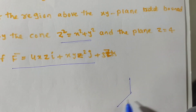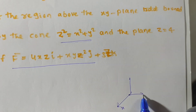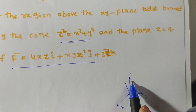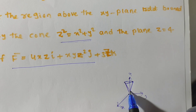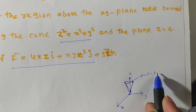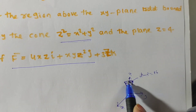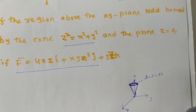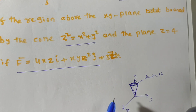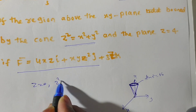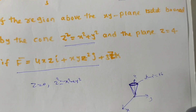If you draw this: x-axis, y-axis, and z-axis, the cone will look like this — at height z = 4, it becomes a circle x² + y² = 16. The surface is a closed surface, so there is a volume. If V is the volume enclosed by S, then V is bounded by z = 0, z² = x² + y², and F is also given.